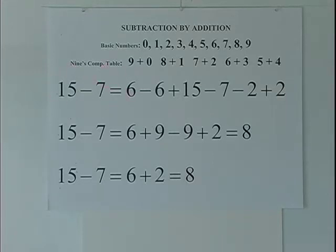In subtraction, the number being subtracted from, 15 in this case, is called the minuend. The number I am subtracting, 7 in this case, is called the subtrahend. The result we get from this operation called subtraction is called the difference. So 15 minus 7 is going to equal 8. 8 is the difference. Minuend minus subtrahend equals the difference.